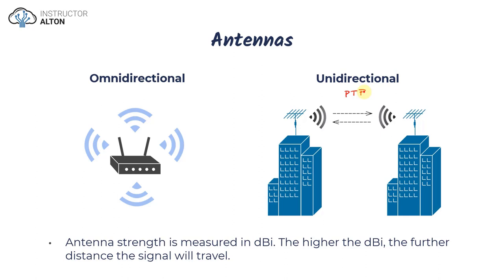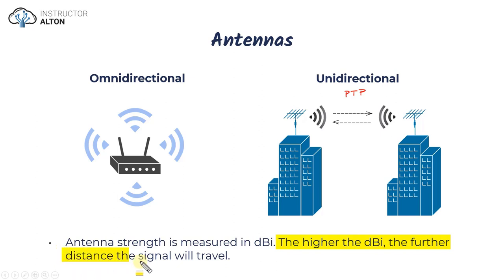Omnidirectional sends signals in all directions while unidirectional is focused in one direction. One important point: antenna strength is measured in dBi, and the higher the dBi, the further the signal will travel. So when shopping for antennas, understand that the higher the dBi, the greater the range.